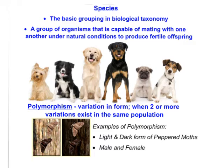So what is a species? The basic grouping in biological taxonomy is the species, but what does that mean? Here is a group of organisms that are part of a species. A species is a group of organisms that is capable of mating with one another under natural conditions to produce fertile and viable offspring.